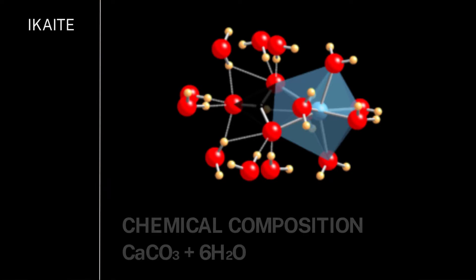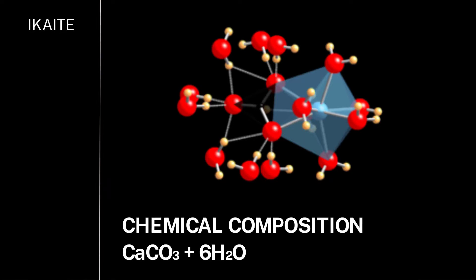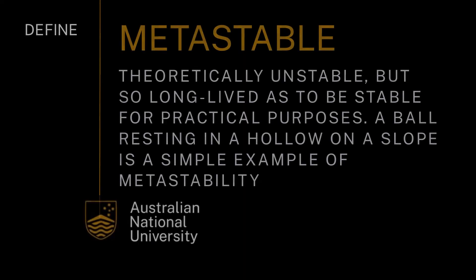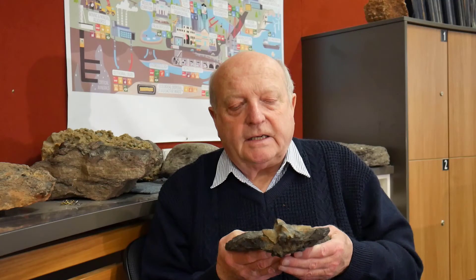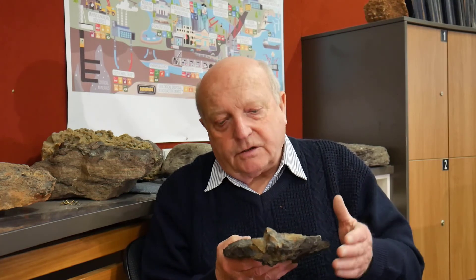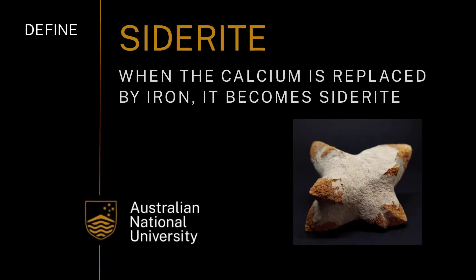Its chemical composition is calcium carbonate and six waters, called hexahydrate. It's a very metastable crystal, so at a later stage the water will disappear and it will be calcium carbonate, or sometimes the calcium is replaced by iron — that's called siderite.